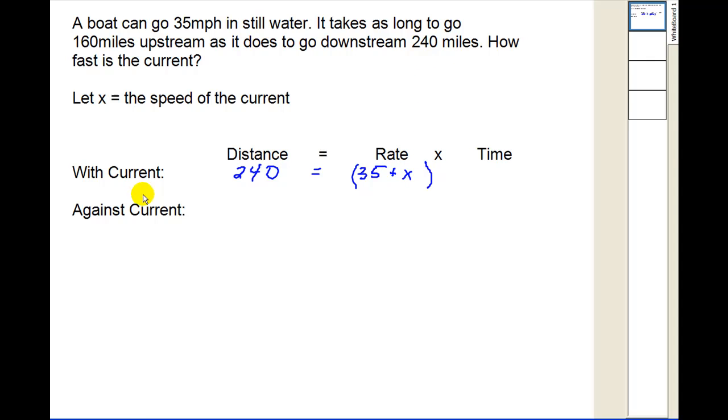We don't know the time, but the time for these two situations is the same. We'll let t equal time. So going against the current, it's going to be 160 miles. Now since the boat is going against the current, the speed will be slower. So it'll be 35 minus x times t.